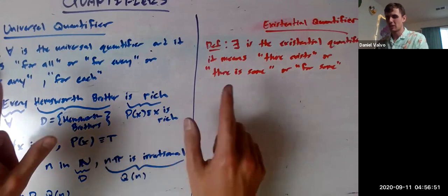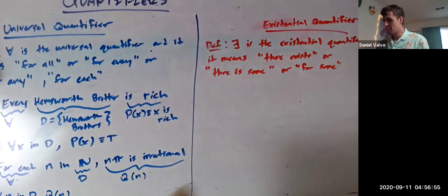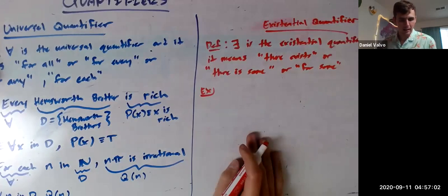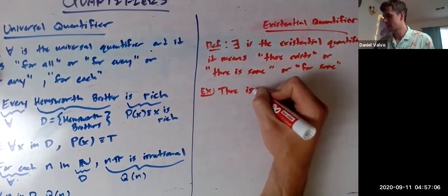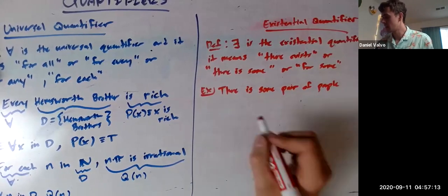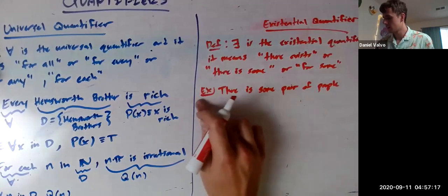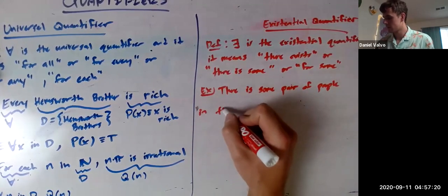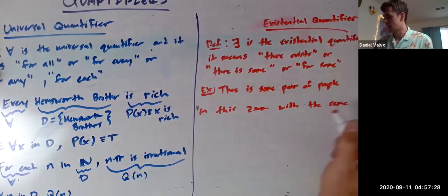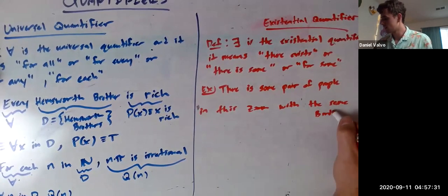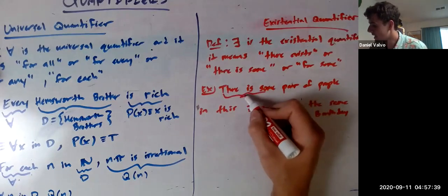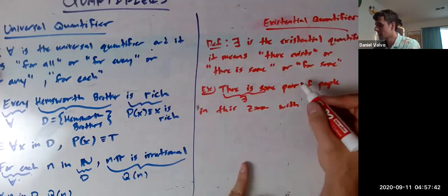And we're going to see that these statements, for all and there exists, they're kind of like a yin-yang situation going on. That's what there exists means. So for example, if you had there is some pair of people in this Zoom. It's saying there exists, there's some pair of people. So it's saying there exists a pair.